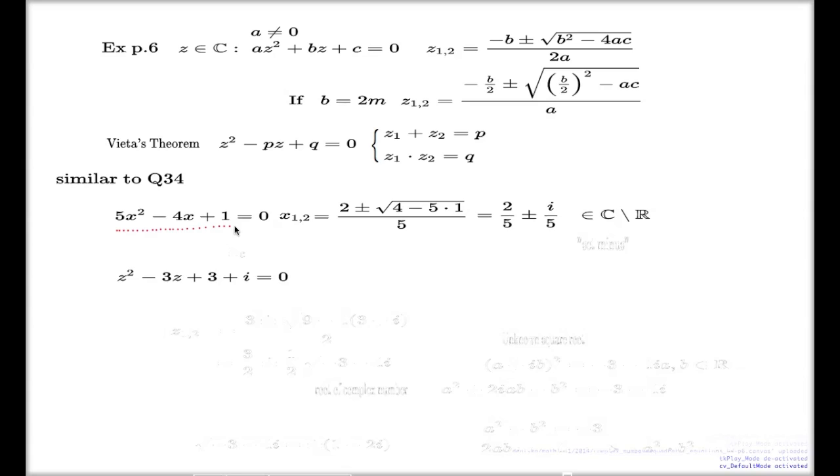I mean this equation itself doesn't carry any complex numbers. It just happened that the solution is a complex number like this. Whereas in this equation you already have the coefficient itself being a complex number. It doesn't make any conceptual differences. In principle the method follows the same line.